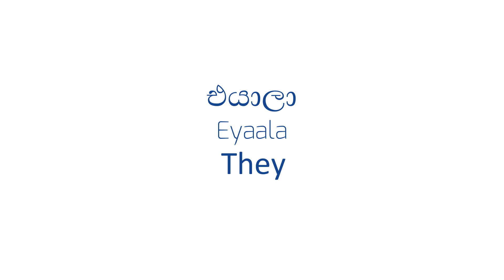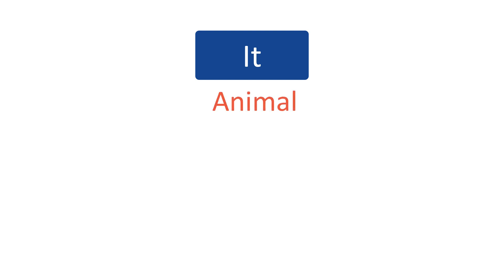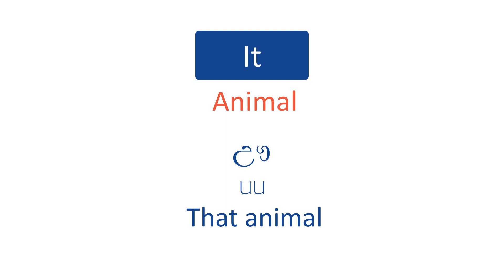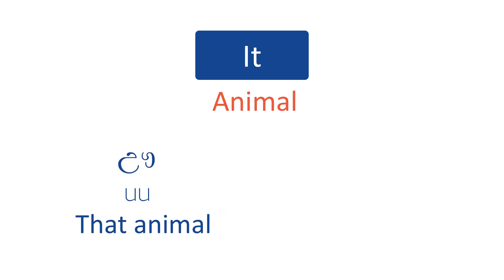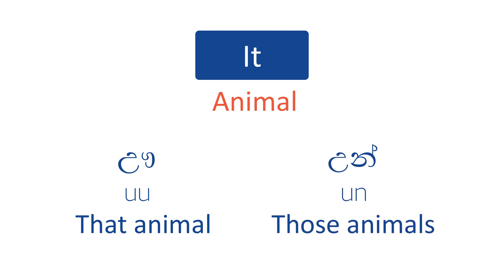Eaala means they. The word it is a bit different in Sinhala. If you want to talk about an animal, the word is ooo, which literally means that animal. The plural word is oom. These two words are used to talk about people as well, but it's not that polite and sometimes might sound a bit rude. Normally, ooo and oom are used to talk about animals.